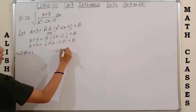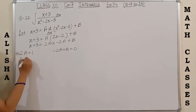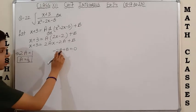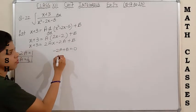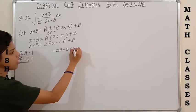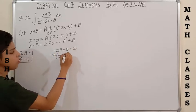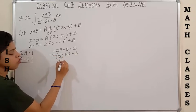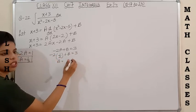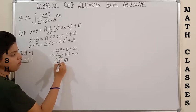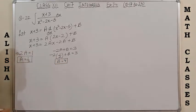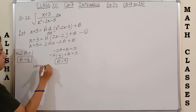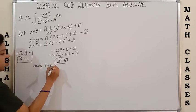So A equals 1/2. Using A = 1/2 in the equation -2A + B = 3: minus 1 shifts to the right, so B = 3 + 1 = 4. The value of A is 1/2 and B is 4. Marking this as equation 1, using the values of A and B in equation 1 gives x+3 = (1/2)(2x-2) + 4.